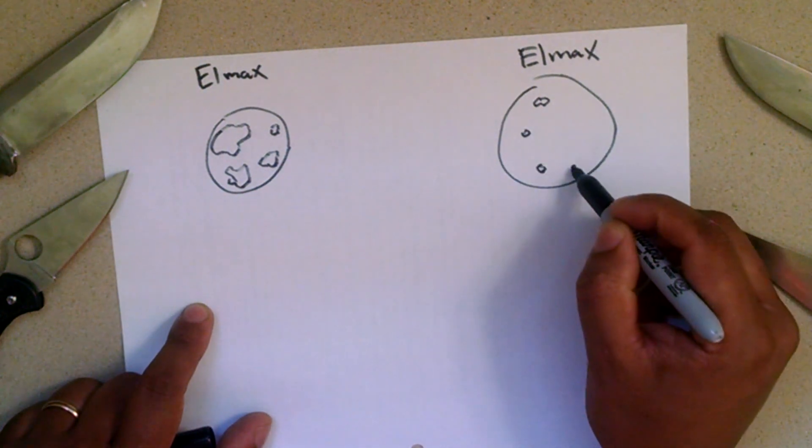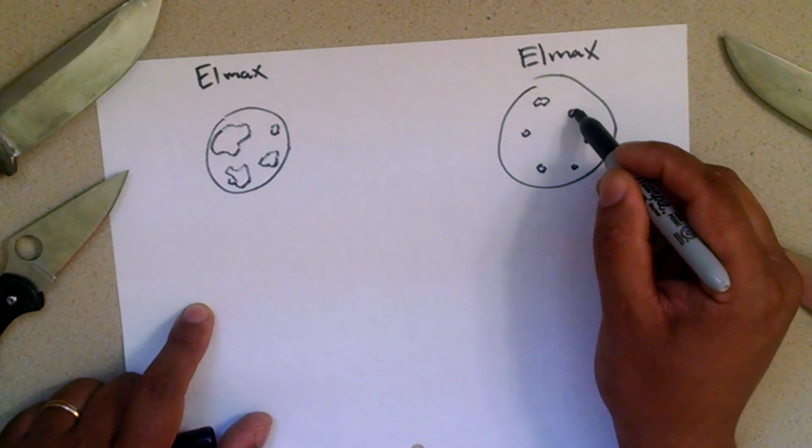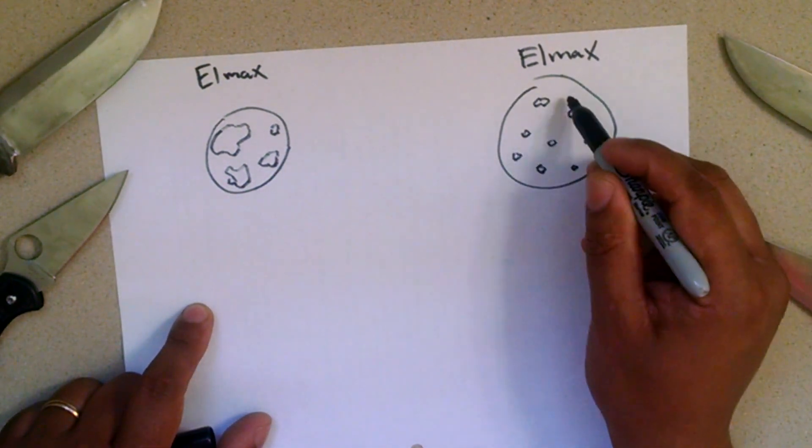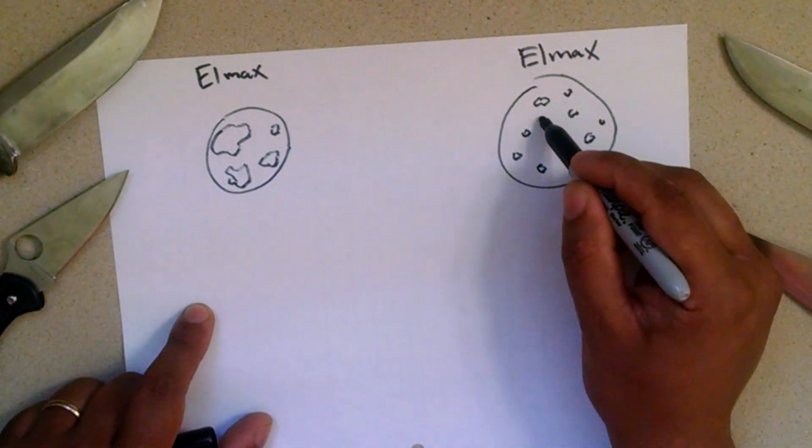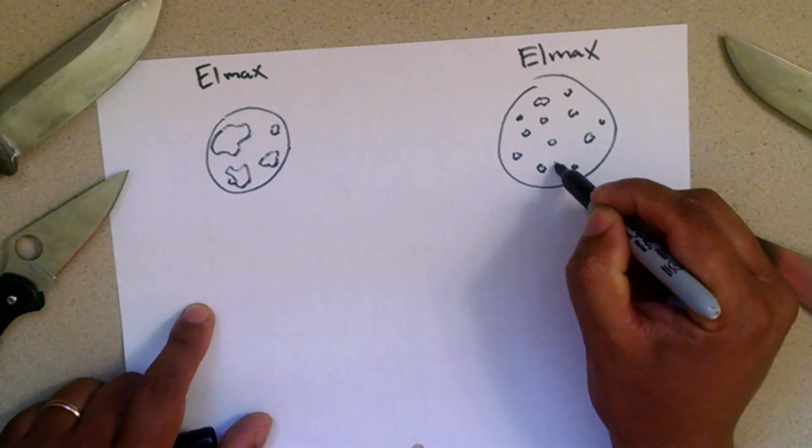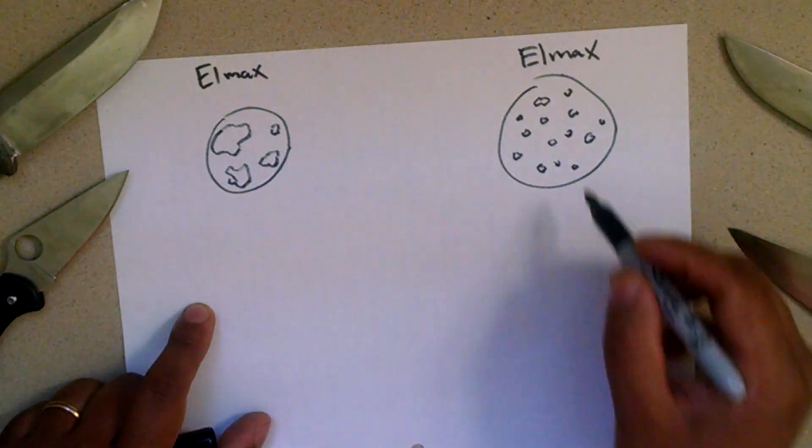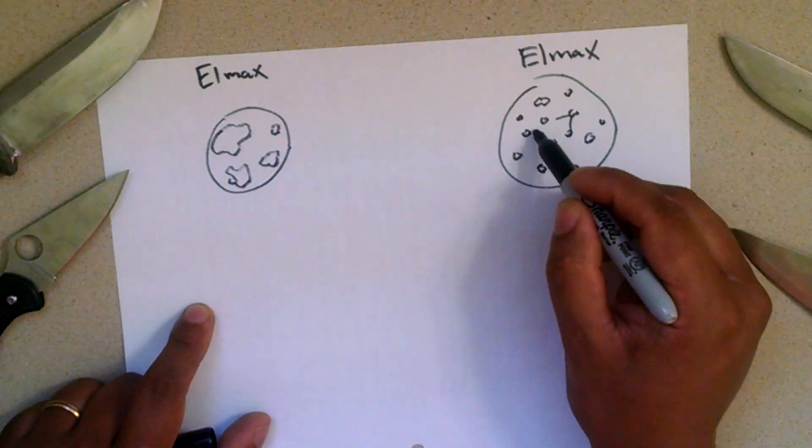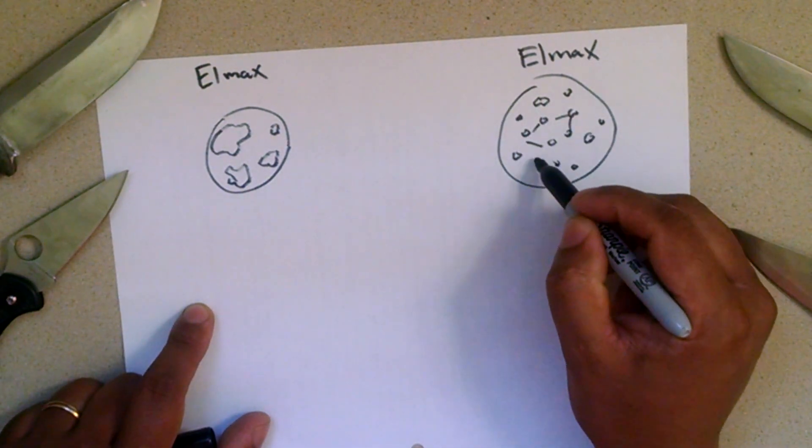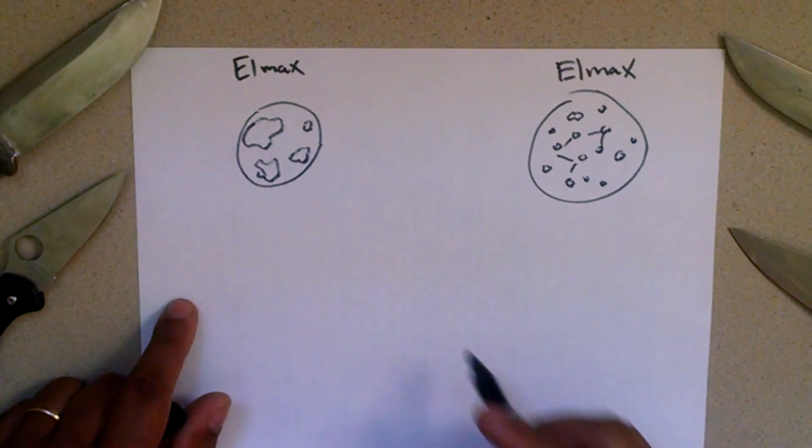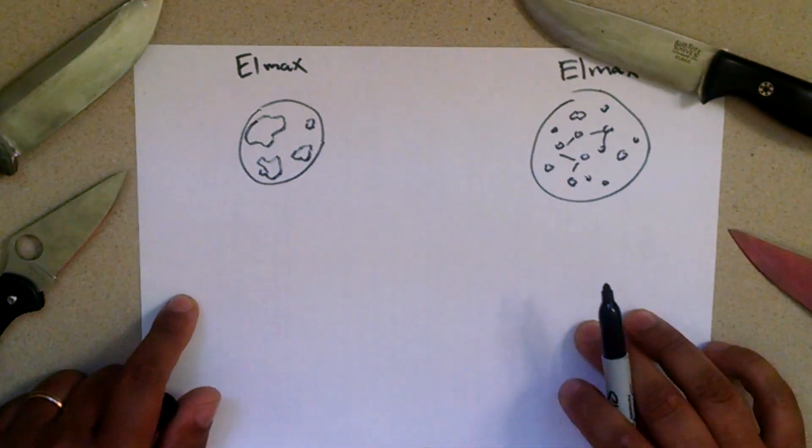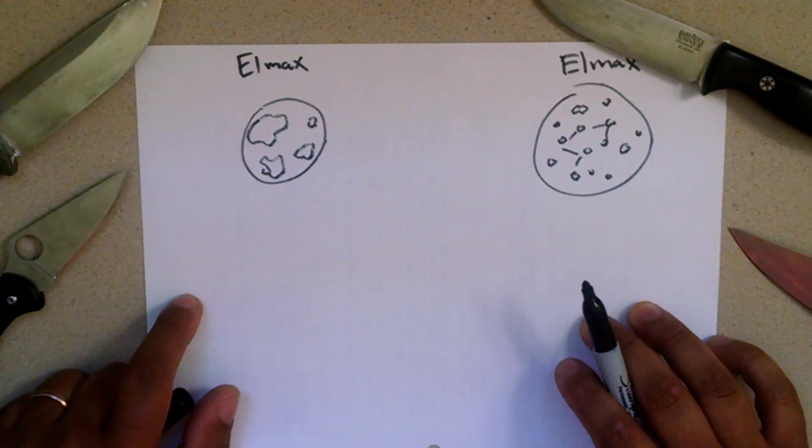Versus when you have the powdered steel process, all the different packets of carbides and alloys are able to have an incredibly uniform fine grain structure that is just not possible with the amount of alloy that's packed into the steel. Well, how do they do that?